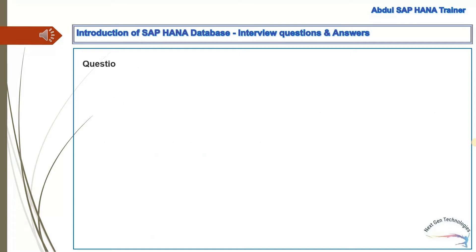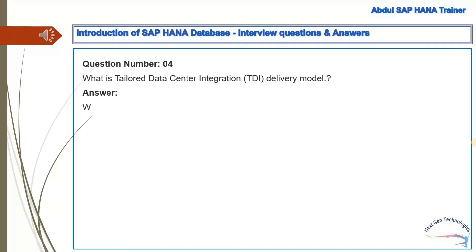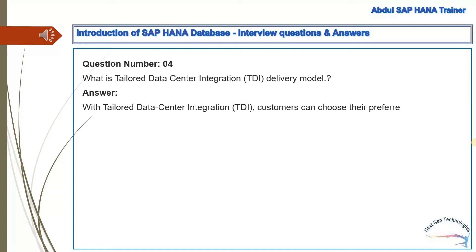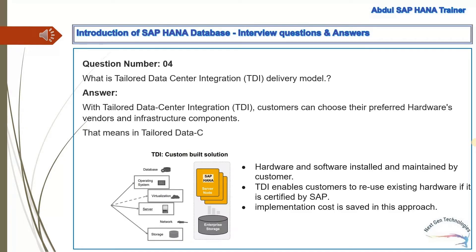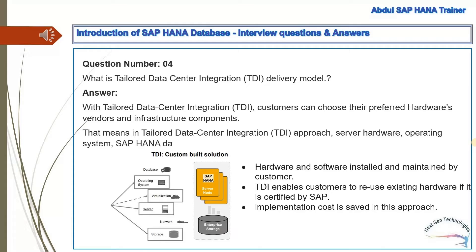Question 4: What is the tailored data center integration (TDI) delivery model? Answer: With tailored data center integration (TDI), customers can choose their preferred hardware vendor and infrastructure components. In the TDI approach, server hardware, operating system, SAP HANA database installation and maintenance are managed by the customer.